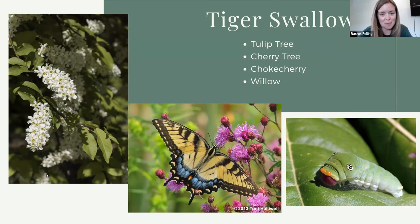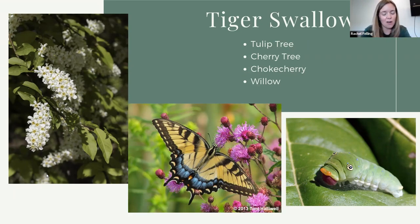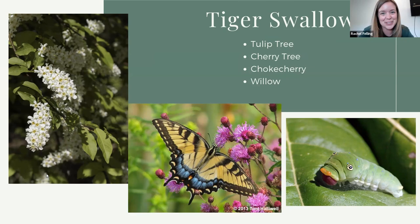The tiger swallowtail gets its name from the black and yellow on its body — beautiful tiger stripes. It's a gorgeous butterfly, and you can see its caterpillar. This is one where, as it goes through its instars, its appearance changes a little bit. I love finding these with kids because it looks like a cartoon character — it's got those spots on the caterpillar that are meant to look like eye spots. The caterpillar's camouflage is that it looks like a snake. They will get a little darker right before they're about to make their chrysalis.